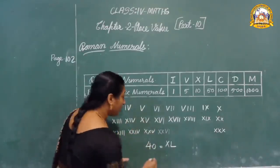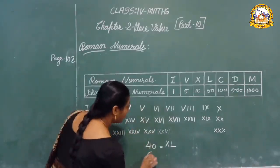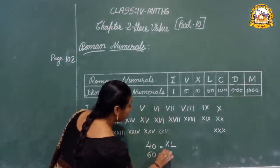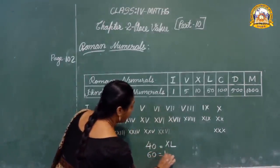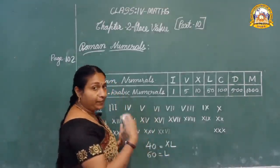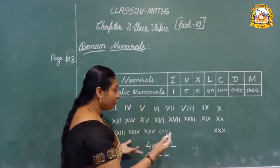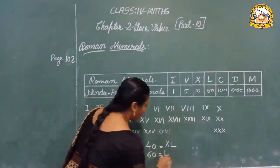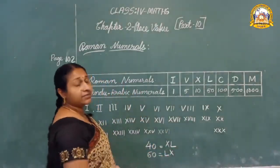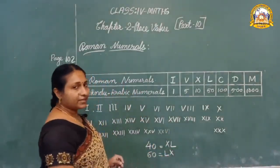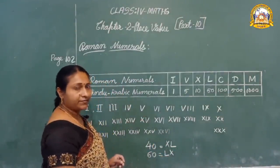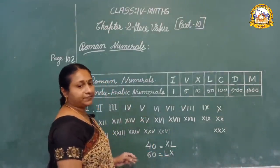For sixty, write L then X — LX means sixty. Can you get it? Yes.